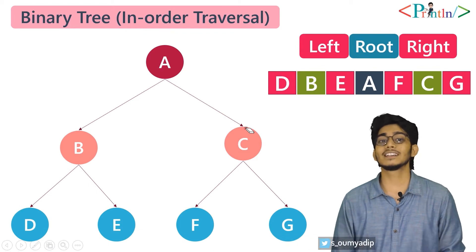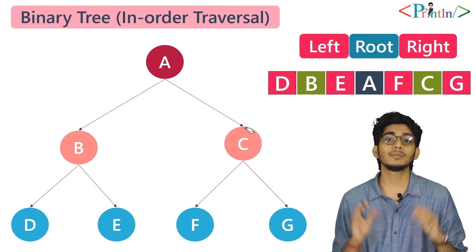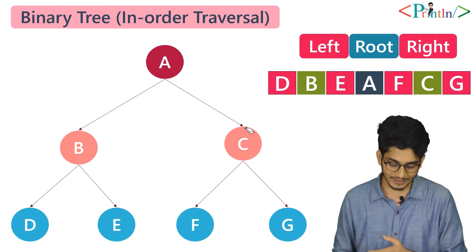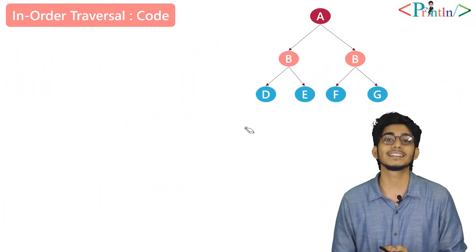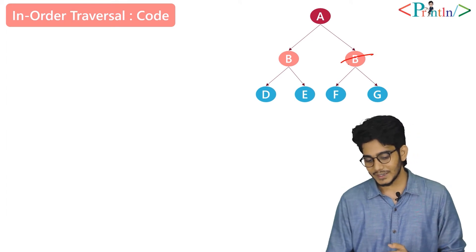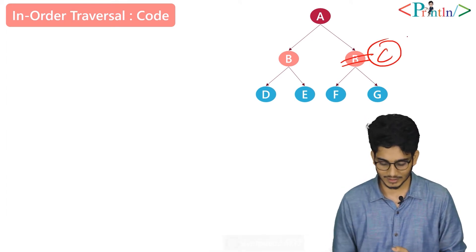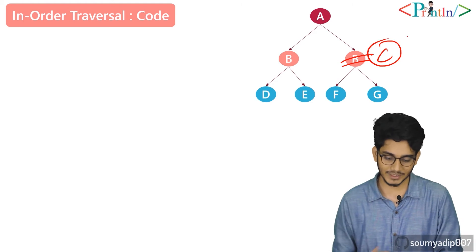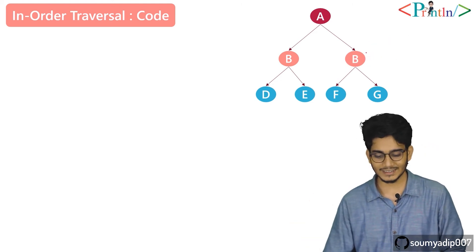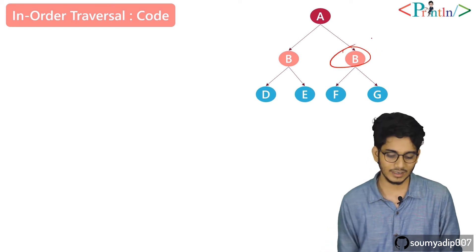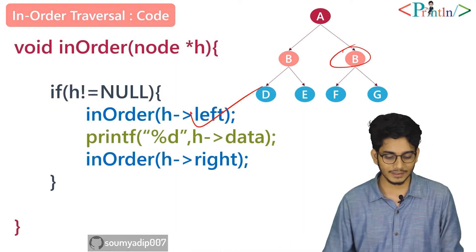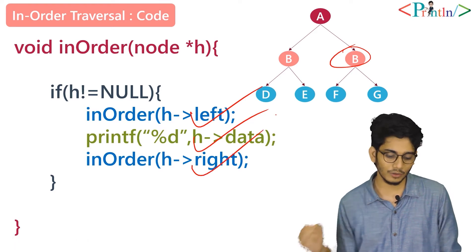I think this portion is clear — how we can perform the in-order traversal. If you have any doubt, just write in the comment section. Now we will see how we can implement this using code. In in-order traversal, at first we will go for the left, then we will go for the data, then we will go for the right.